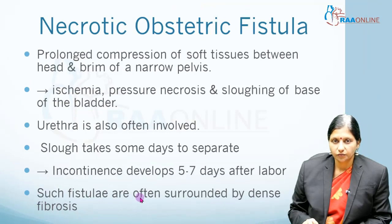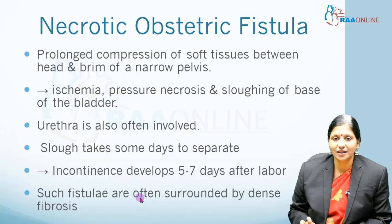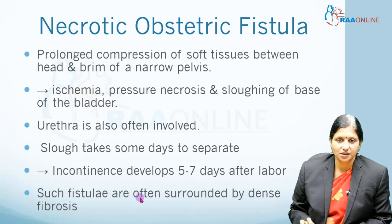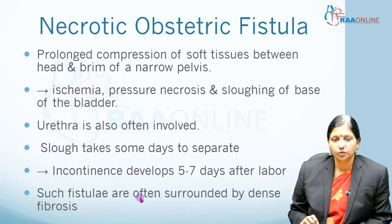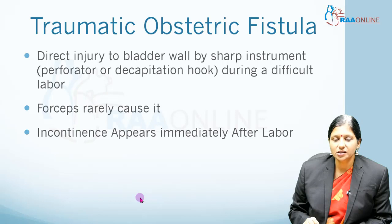Necrotizing obstetric fistulas result from prolonged compression of soft tissue between the fetal head and the brim of a narrow pelvis, causing ischemia, pressure necrosis, and sloughing of the base of the bladder. The bladder tissues get caught between the fetal head and the symphysis pubis. The urethra is also involved at the level of the bladder neck. Sloughing takes five to seven days, so the patient develops incontinence five to seven days after labor, and these fistulas are surrounded by extensive dense fibrosis.